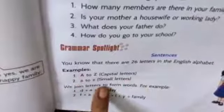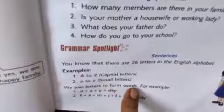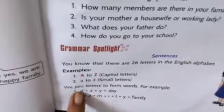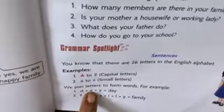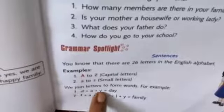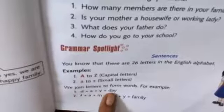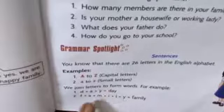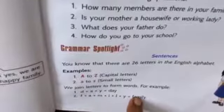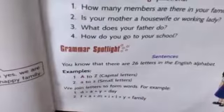We join letters to form words. For example, D, A, Y joined together makes the word 'day'. So we join letters to make words.